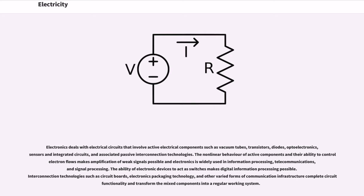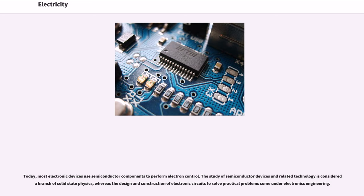Electronics deals with electrical circuits that involve active electrical components such as vacuum tubes, transistors, diodes, optoelectronics, sensors and integrated circuits, and associated passive interconnection technologies. The nonlinear behavior of active components and their ability to control electron flows makes amplification of weak signals possible, and electronics is widely used in information processing, telecommunications, and signal processing. The ability of electronic devices to act as switches makes digital information processing possible. Today, most electronic devices use semiconductor components to perform electron control. The study of semiconductor devices and related technology is considered a branch of solid-state physics, whereas the design and construction of electronic circuits to solve practical problems comes under electronics engineering.